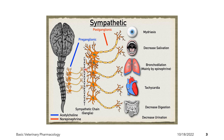At the termination of the pre-ganglionic neuron arises the post-ganglionic neuron, which is composed of the cell body and the axon, and it terminates at the effector organ. The post-ganglionic neuron is longer compared to the pre-ganglionic neuron.